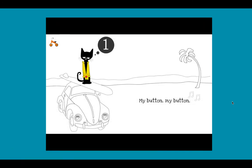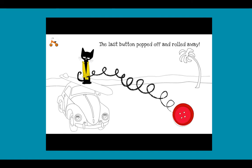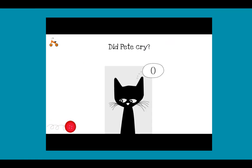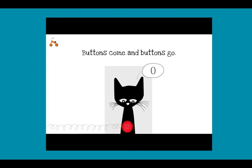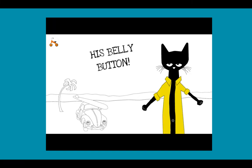My button, my button, my one groovy button. Oh no! The last button popped off and rolled away. How many buttons are left? Zero. One minus one equals zero. Did Pete cry? Goodness, no! Buttons come and buttons go. Pete looked down at his buttonless shirt. And what do you think he saw? His belly button!